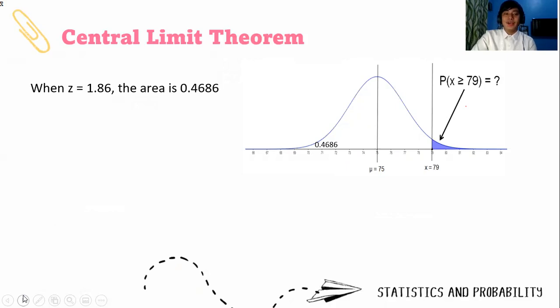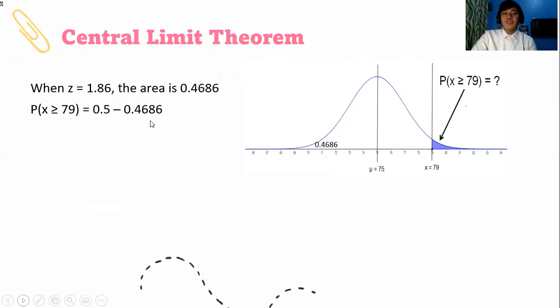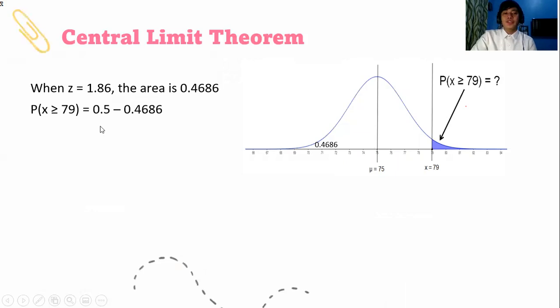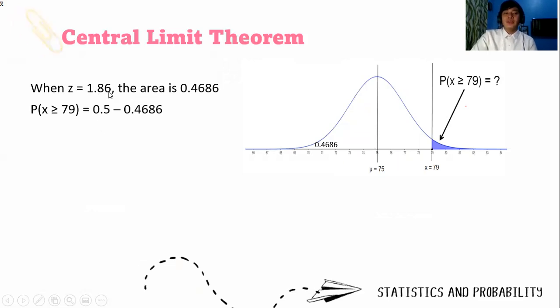Now, the probability of z is greater than or equal to 79. Obviously, our operation is to subtract from half of the area. That's 0.5 minus the area when z is 1.86 from 0 to 79. So we subtract it and the answer is 0.0314.